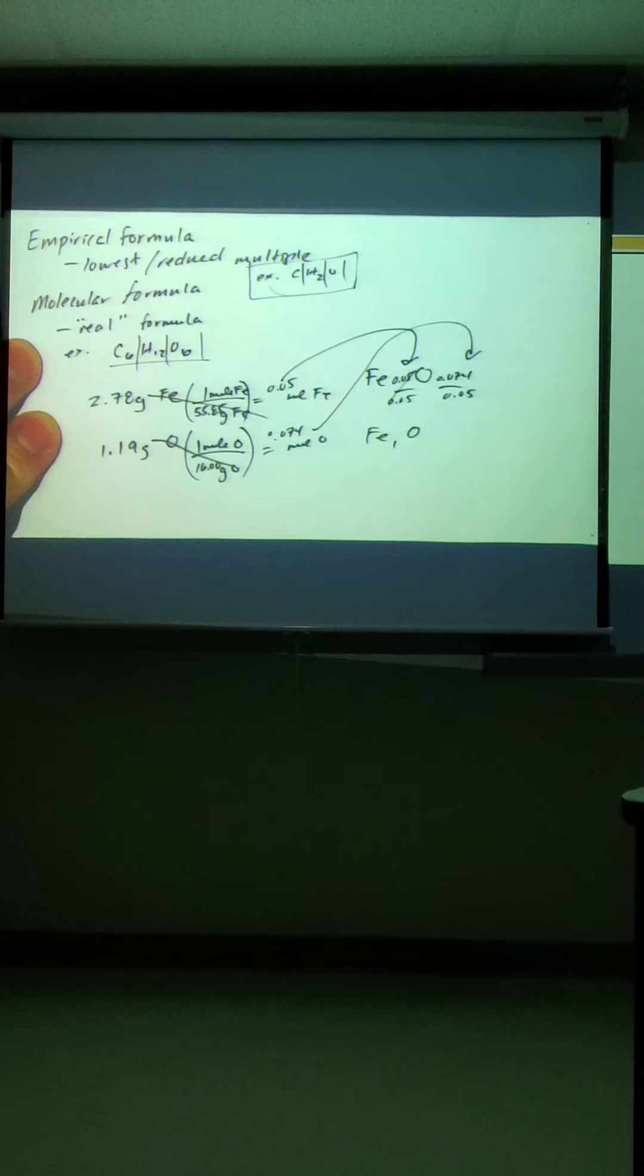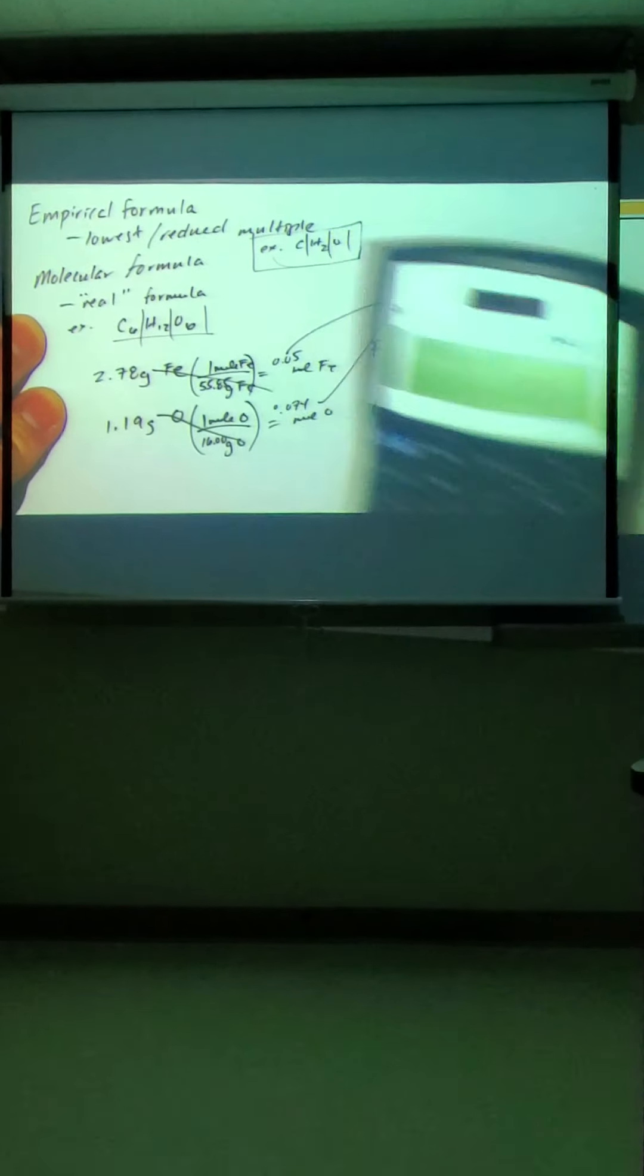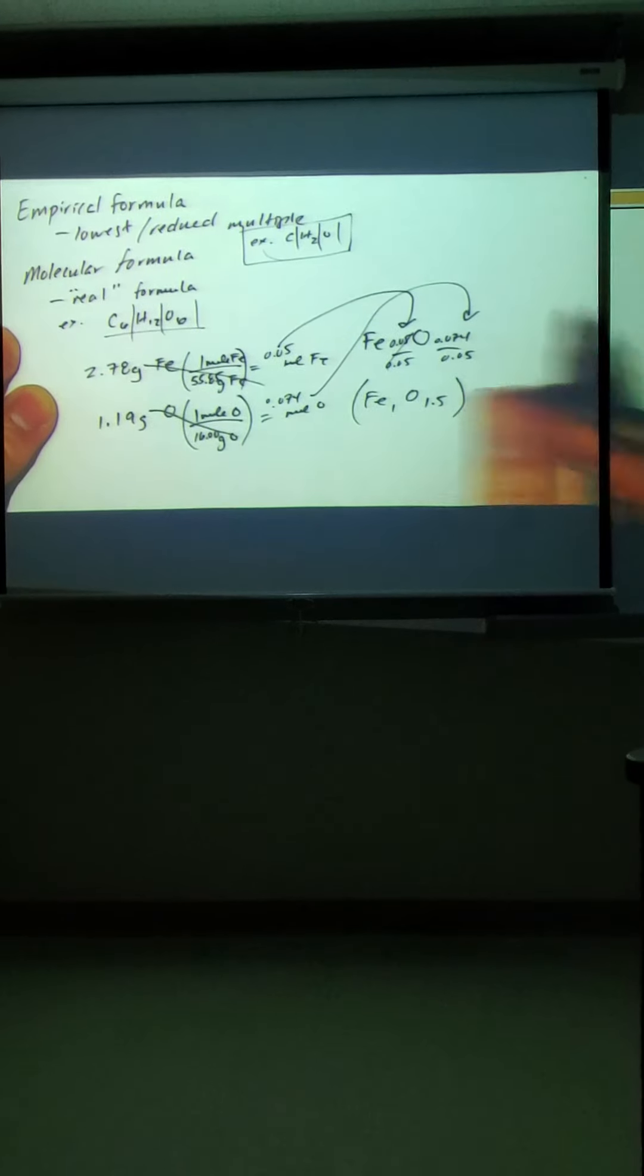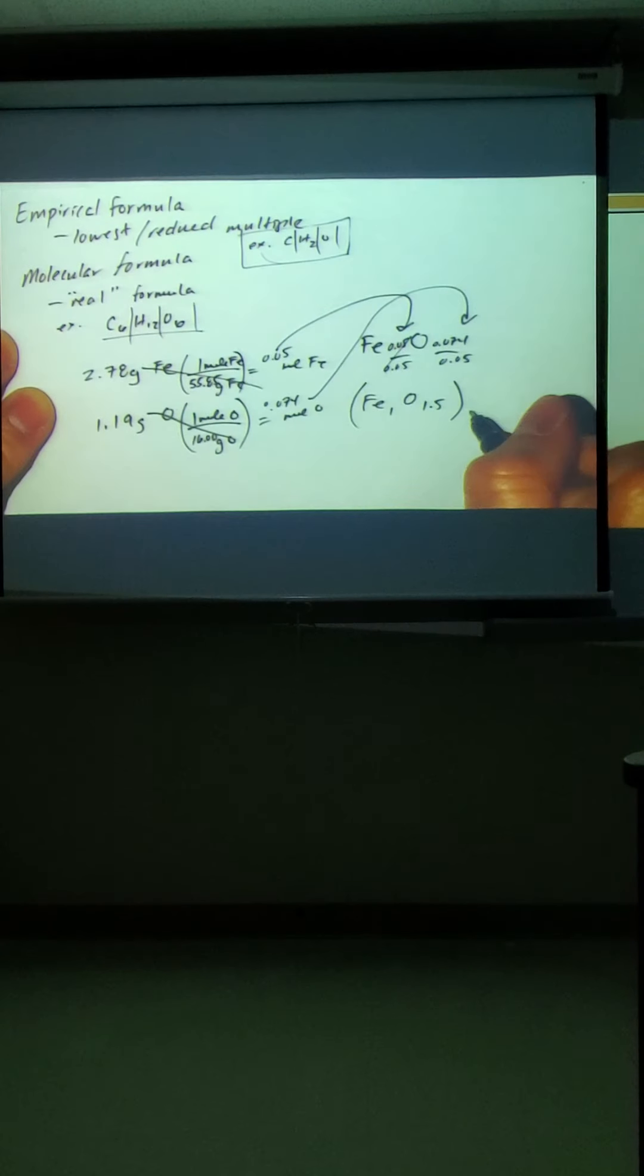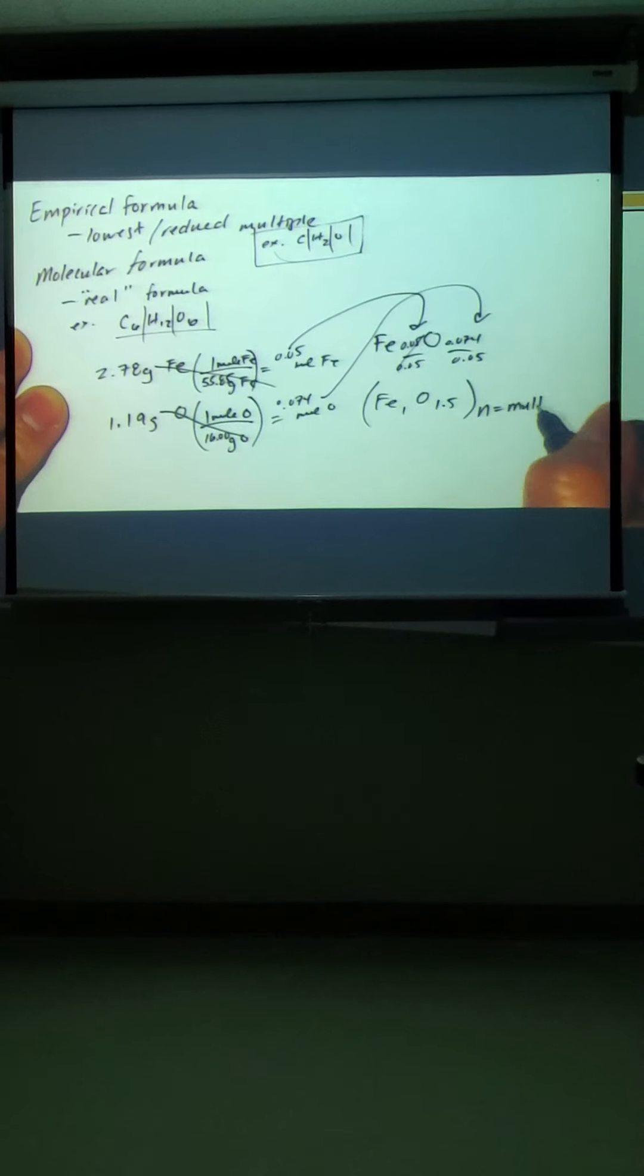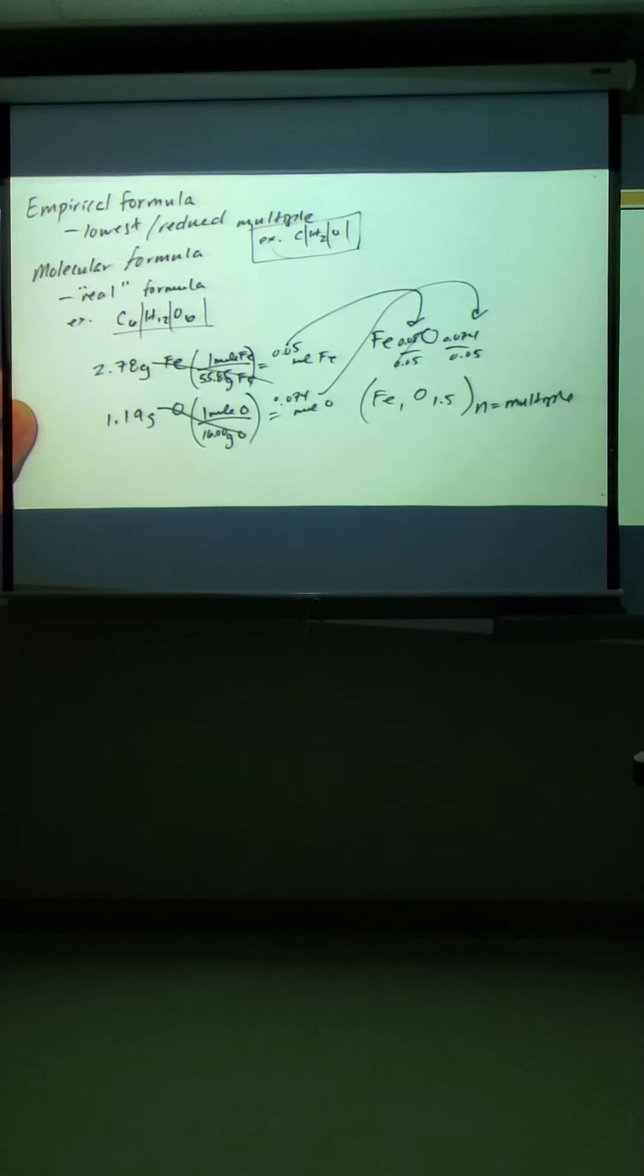Unfortunately, we reduce this one. So when we take 0.075 and divide it by 0.05, we get about 1.5. We round up. And this is like an empirical formula, but empirical formulas need to be whole numbers. This one's not. So we have some multiple, and it's a multiple to give us the answer we want.